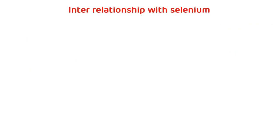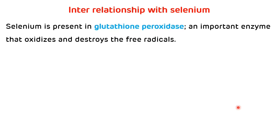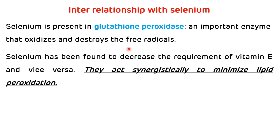Selenium is a trace element present in glutathione peroxidase, an important enzyme that oxidizes and destroys free radicals. Selenium has been found to decrease the requirement of Vitamin E, and vice versa. They both act together to minimize lipid peroxidation.